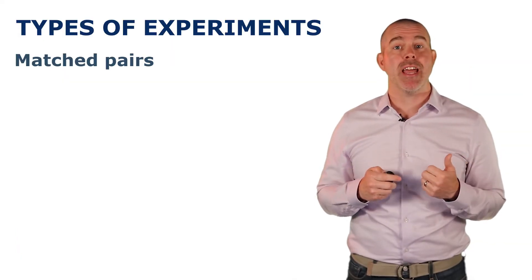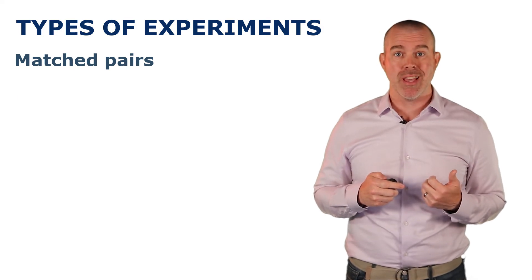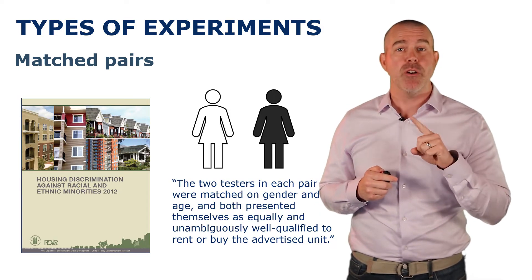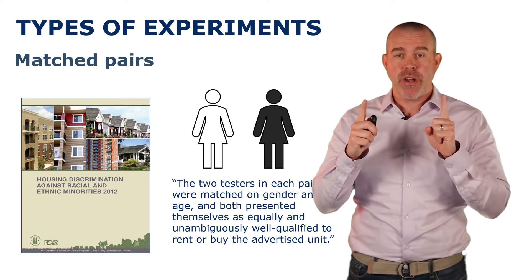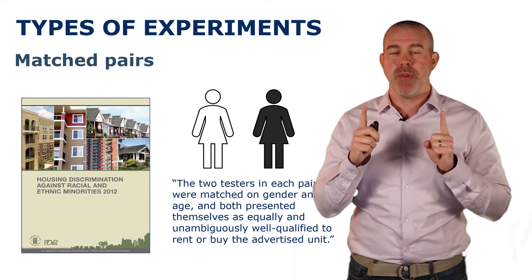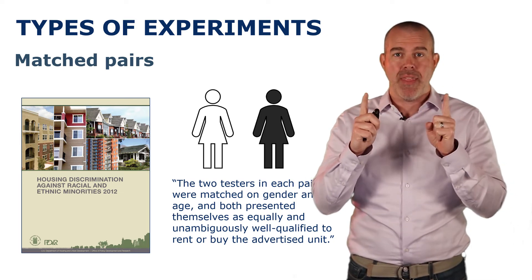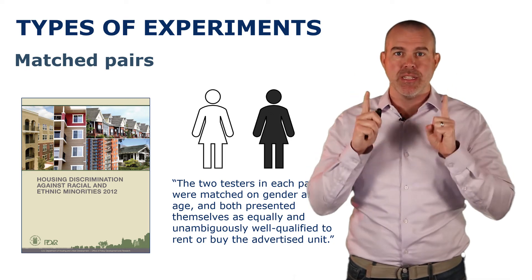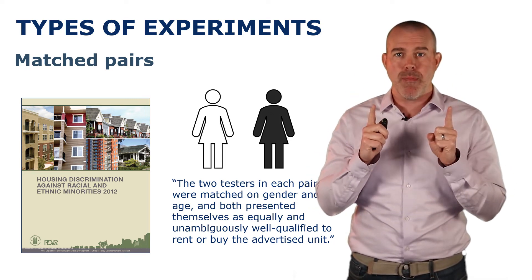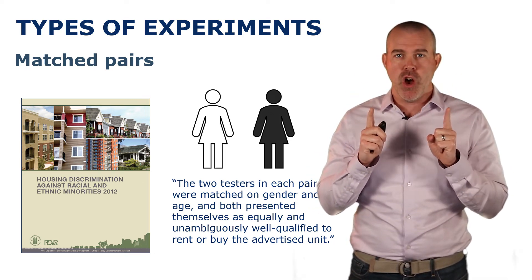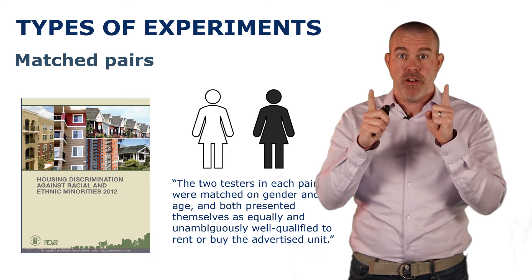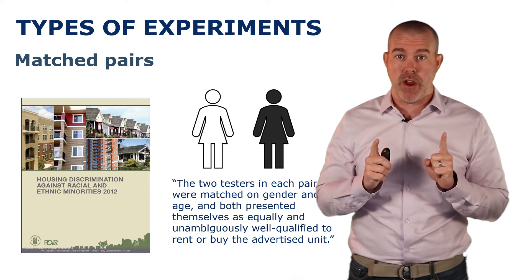The second type of design experiment is called a matched pairs. We actually talked about one of these. This was the housing discrimination. They actually paired individuals according to gender and age and made them equally well qualified. And that way, because they were paired and sent to the same home or apartment, they could know that if there was a difference based on race, it was simply because of race, because everything else was paired.